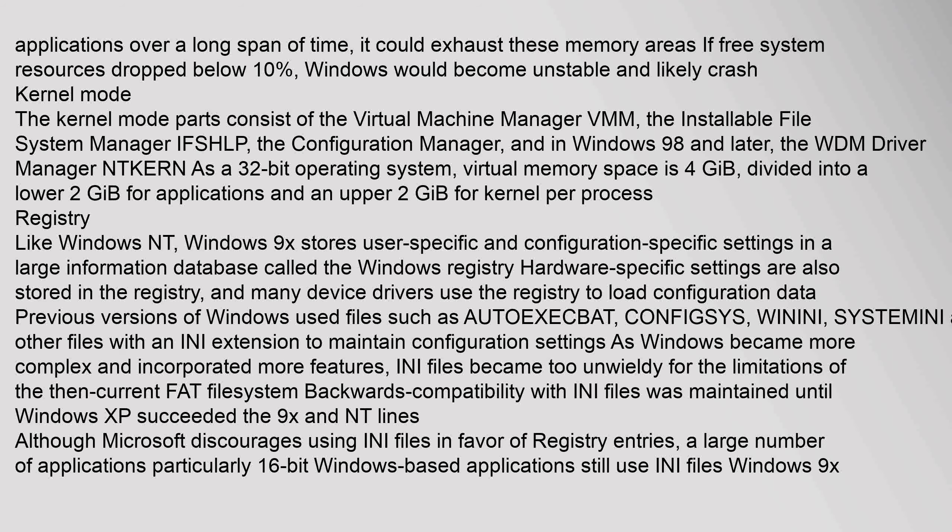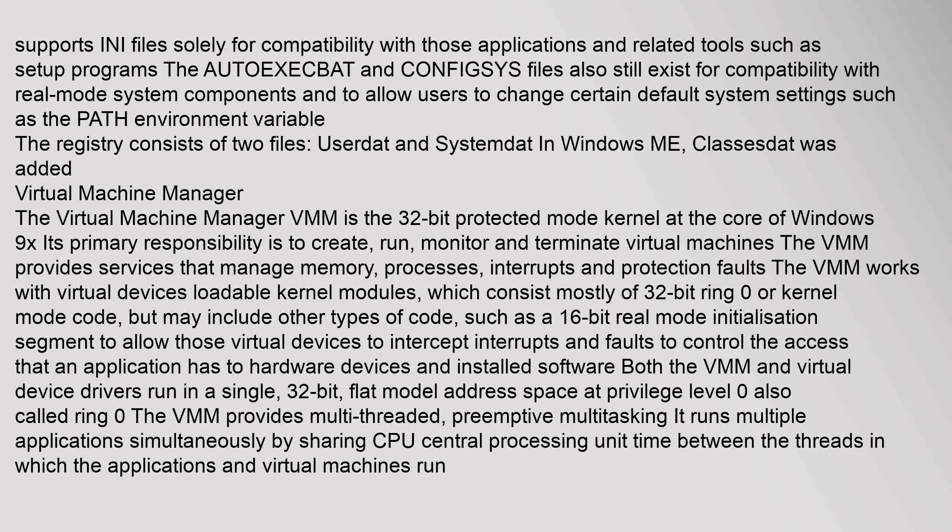Previous versions of Windows used files such as AUTOEXEC.BAT, CONFIG.SYS, WIN.INI, SYSTEM.INI and other INI files to maintain configuration settings. As Windows became more complex, INI files became too unwieldy. Backwards compatibility with INI files was maintained until Windows XP, although Microsoft discourages using INI files in favor of registry entries. A large number of applications, particularly 16-bit Windows-based applications, still use INI files. The registry consists of two files, USER.DAT and SYSTEM.DAT; in Windows ME, CLASSES.DAT was added.